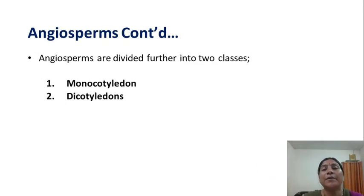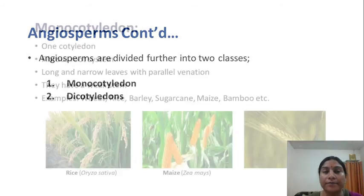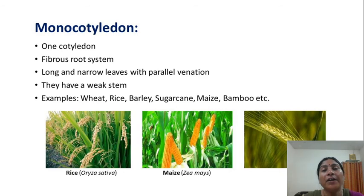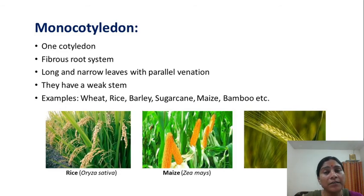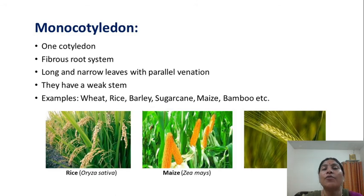Angiosperms are further classified into two classes: Monocotyledon and Dicotyledon. In Monocots, the unique character is the presence of a single cotyledon in the seed. The root system is fibrous, leaves are long and narrow with parallel venation, and they have a weak stem. Examples of Monocots: wheat, rice, barley, jowar, sugarcane, maize, etc.